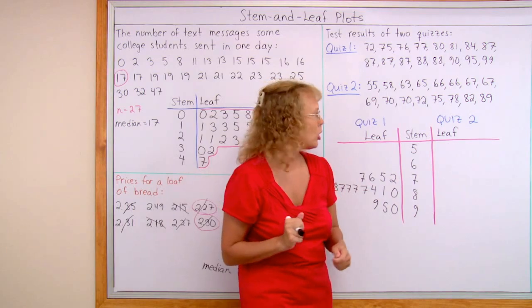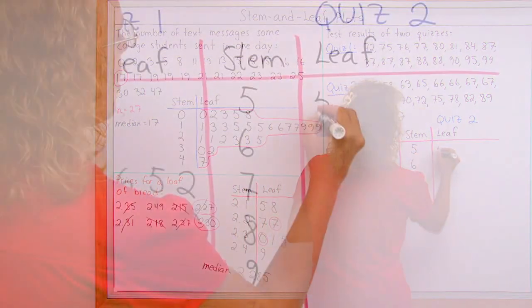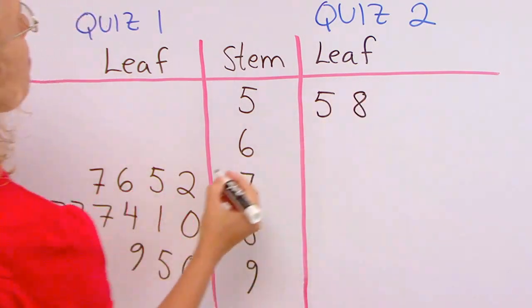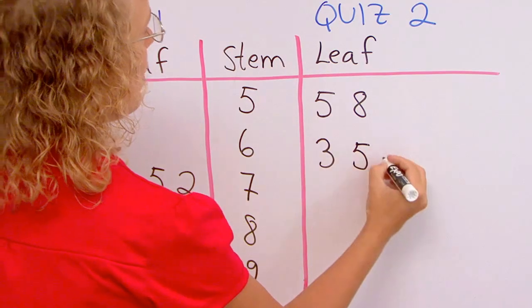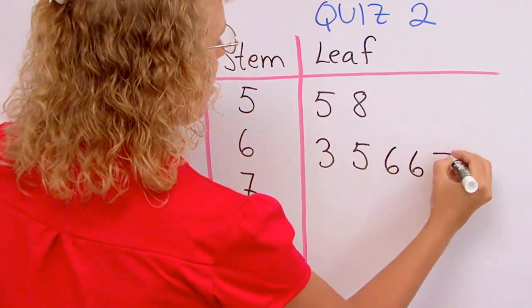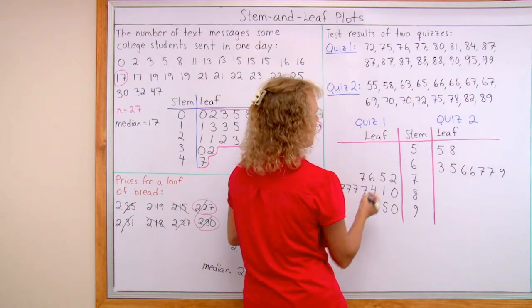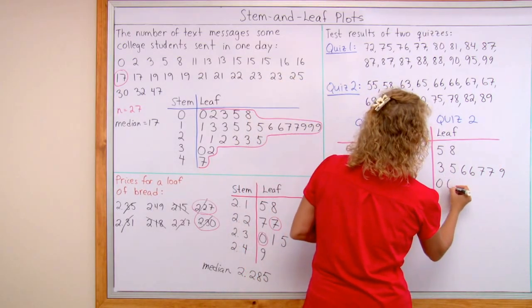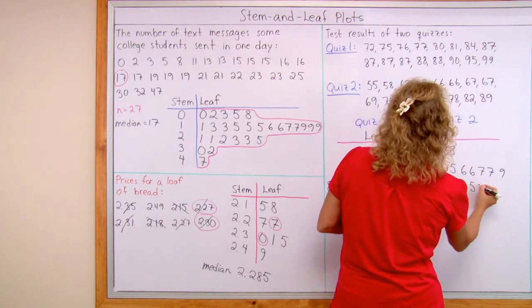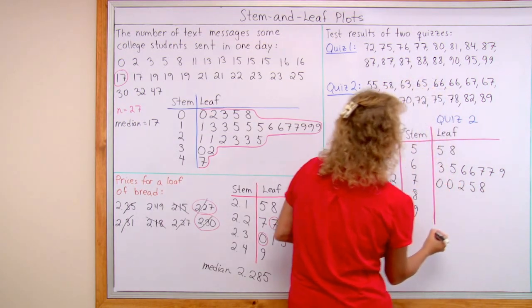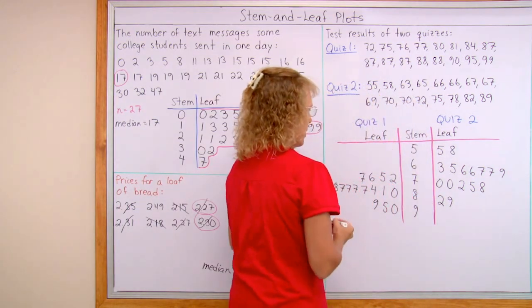And then the quiz two, over here, we start with 55. So 55 and 58. And then 60s, we have 63, 65, 66 two times, 67 two times, and 69. And then in the 70s, we have two 70s, then 72, 75, then 78. In the 80s, 82 and 89. Now it should be all done.